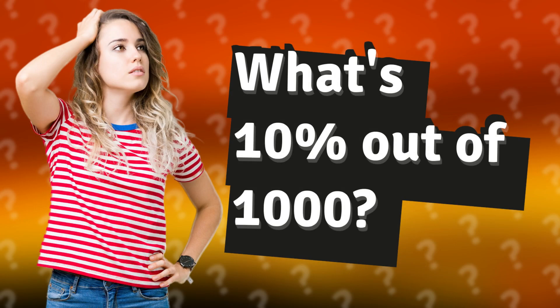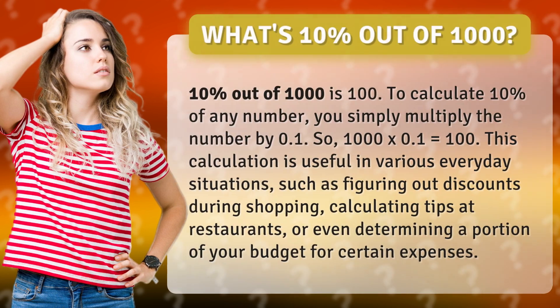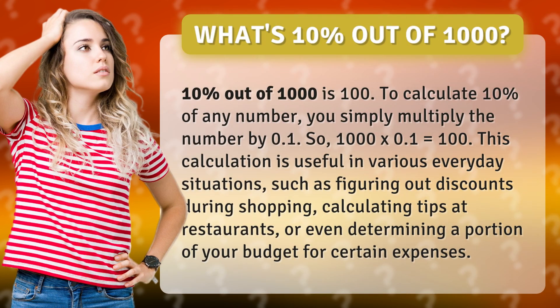What's 10% out of 1,000? 10% out of 1,000 is 100. To calculate 10% of any number, you simply multiply the number by 0.1. So, 1,000 times 0.1 equals 100.